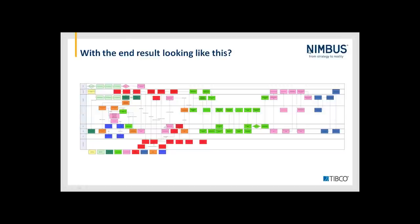This process diagram — with swim lanes, multiple colors, multiple shapes, and maybe different standards for different parts — is excellent for the small number of people who really understand business and system processes. But for the wider audience, this is not very understandable. This is not something they can look at and easily say, now I understand how we do that particular process.